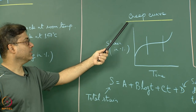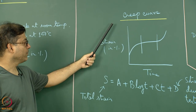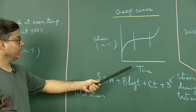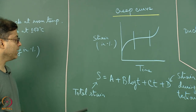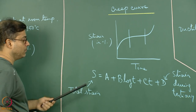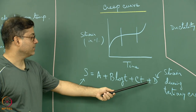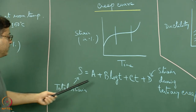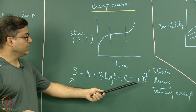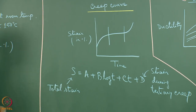The creep curve can be represented as S = A + B·log(T) + C·T + D, where S is the total strain and D is the strain during the tertiary creep. This equation is the best fit for the creep curve with strain percentage on the y-axis and time on the x-axis.